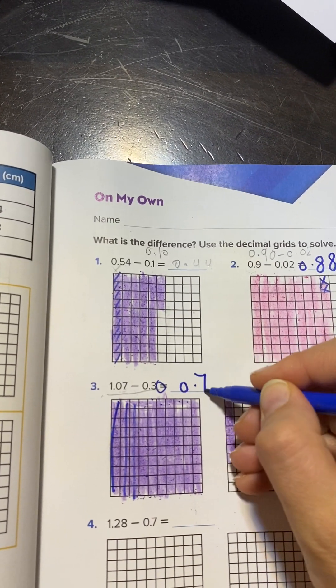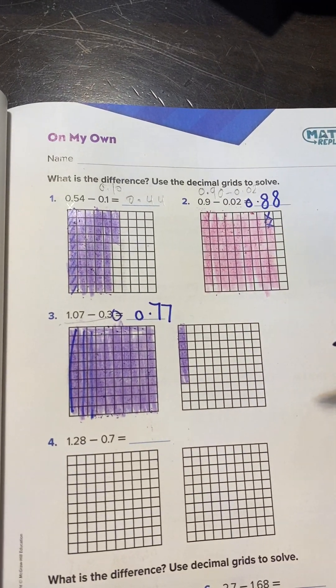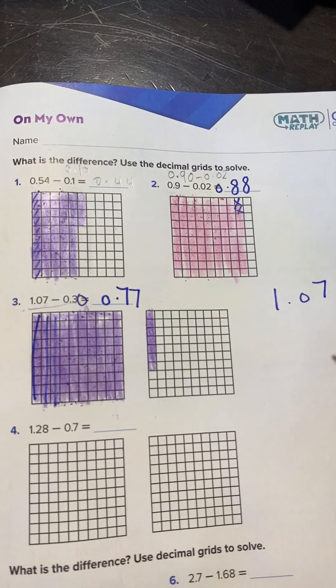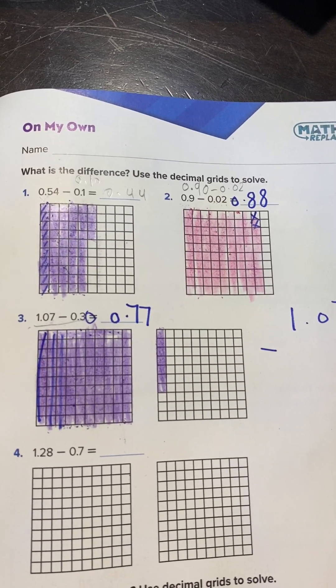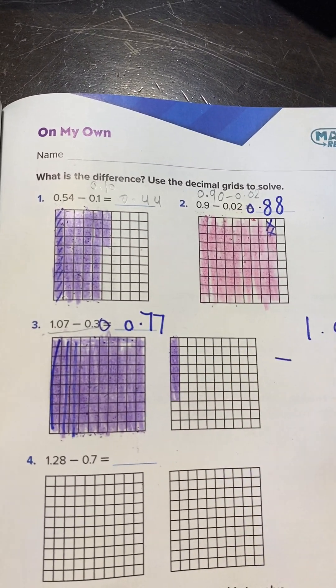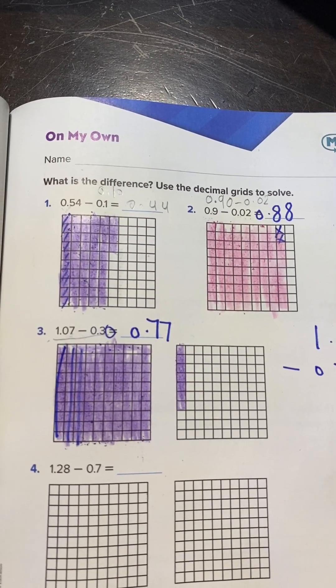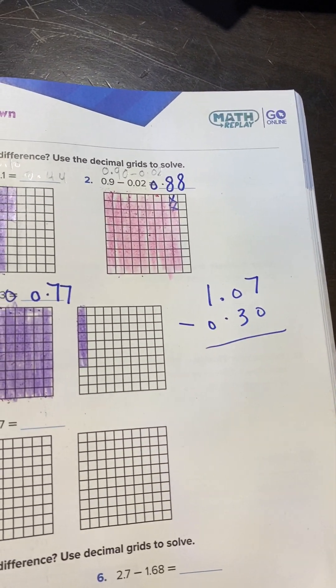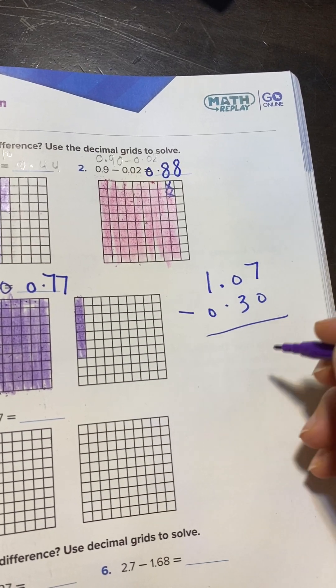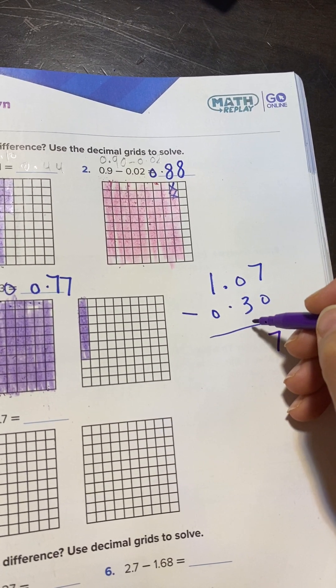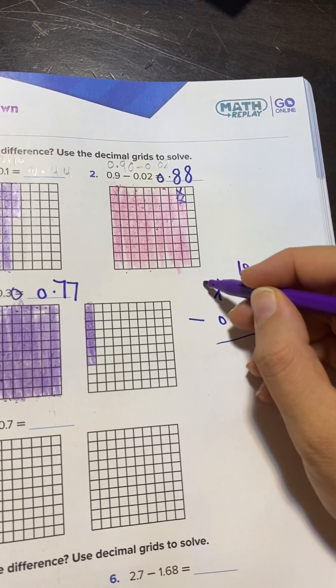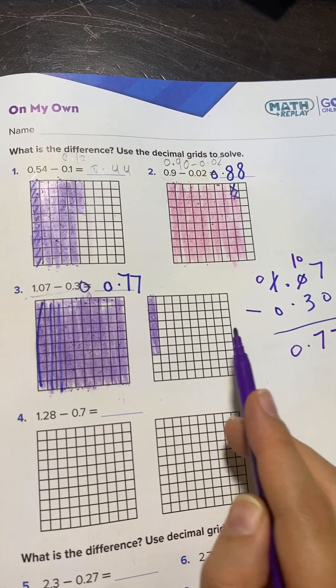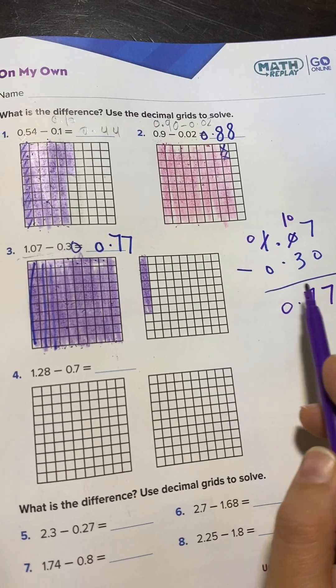So how many left? 77 hundredths. I will do the same question using the regular way: 1.07 minus 0.30. You have to know that lining up the decimal is very important. Now, 7 minus 0 is 7. 0 minus 3, we can't, so we borrow. 0 will become 10, 1 becomes 0. 10 minus 3 is 7. Is it the same answer? Yes. This one using regular subtraction, this one using the decimal grid.